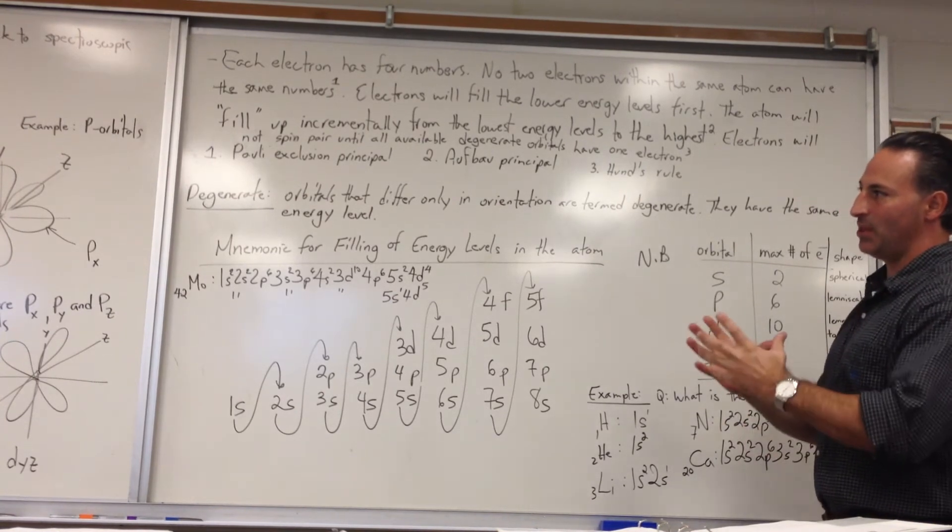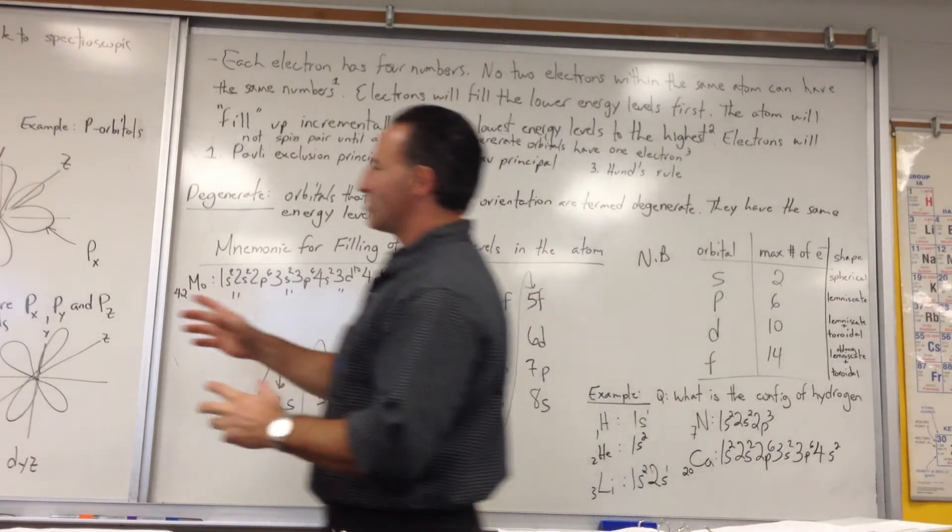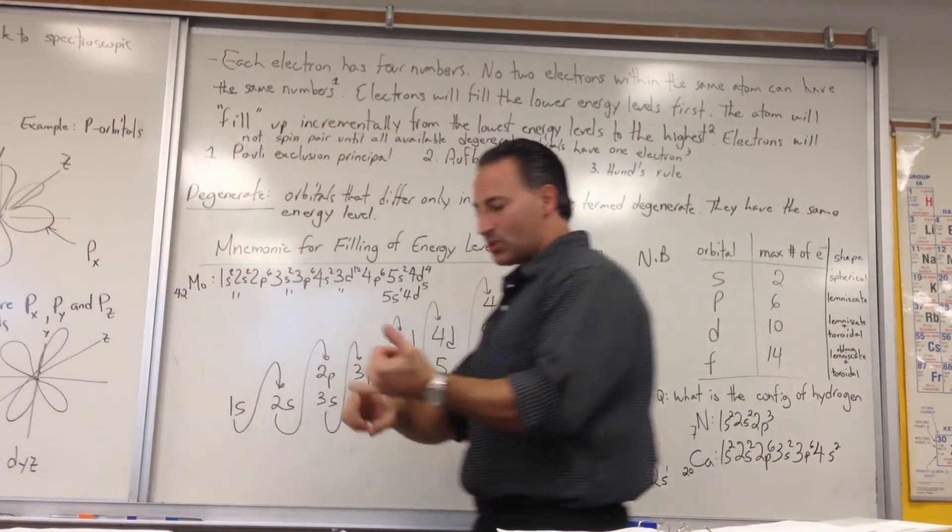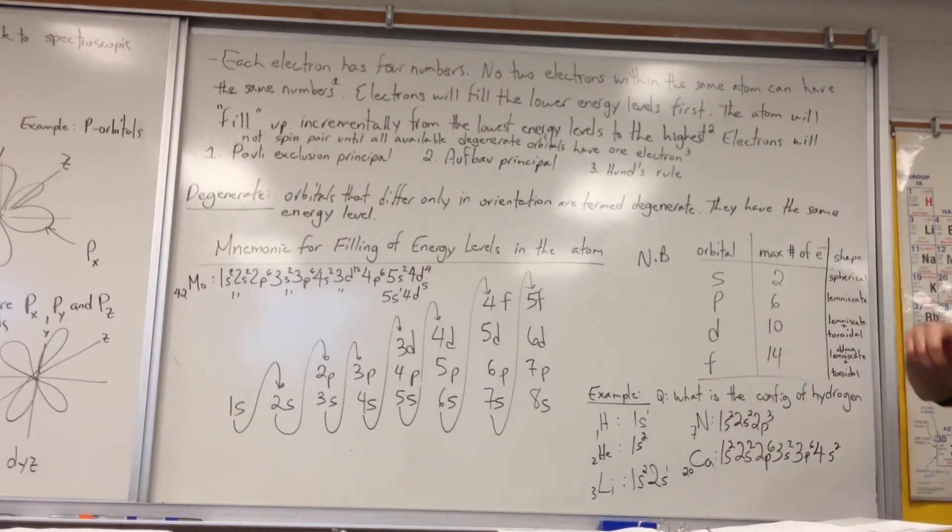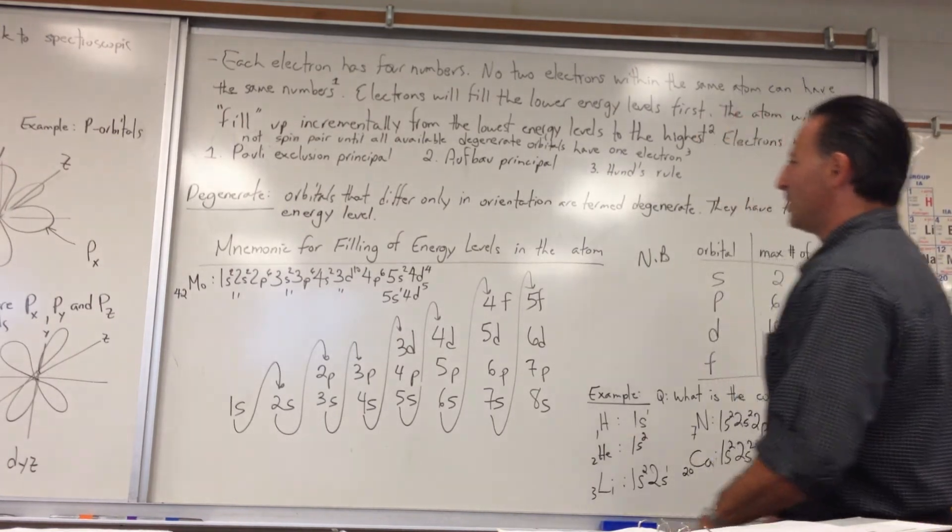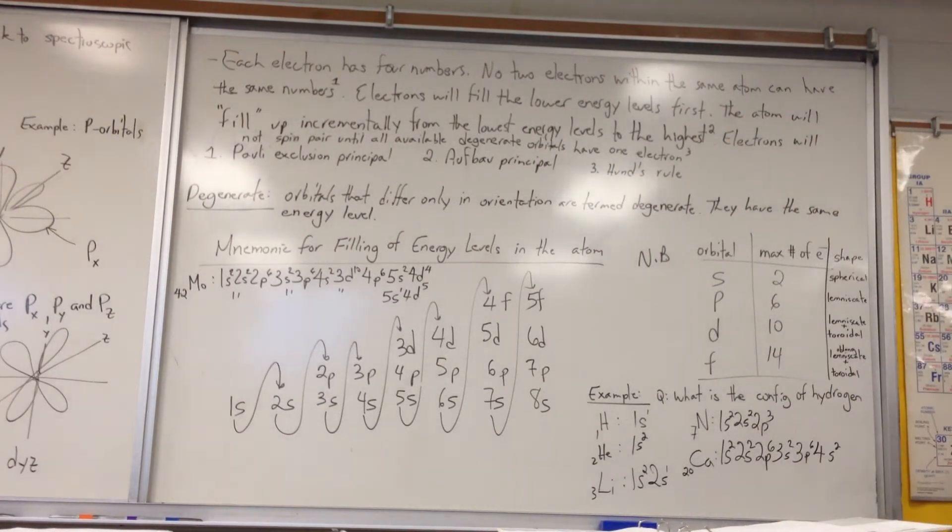So if you have, say, a P orbital, because there's a Px, a Py, and a Pz, the X will fill, we'll get one electron, then the Y will get one electron, then the Z will get one electron. When all three of the P orbitals have an electron, then you'll get another electron in Px where they'll spin pair. Then you'll have two electrons in Px and a single electron in Py and Z.